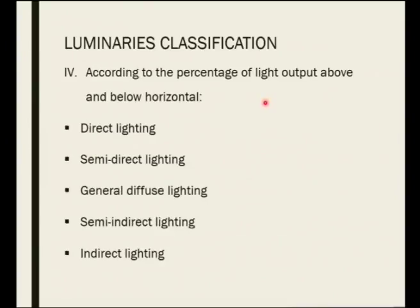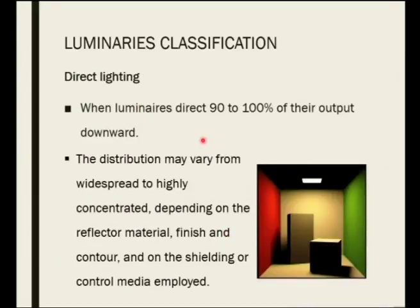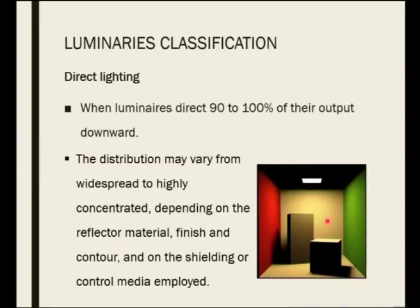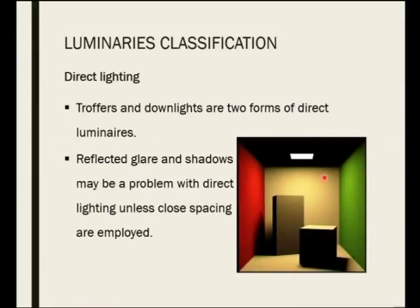According to percentage of light output, lighting is classified as direct, semi-direct, general diffuse, semi-indirect, and indirect lighting. In direct lighting, the luminaire directs 90–100% of the output downward — you see no light on the ceiling. The distribution varies depending on the concentration of light and the reflector material inside. Troffers and downlights come under direct lighting. Reflected glare and shadows can be a problem because the light is directed in only one direction, and unless close spacing is used, glare and shadow issues increase.